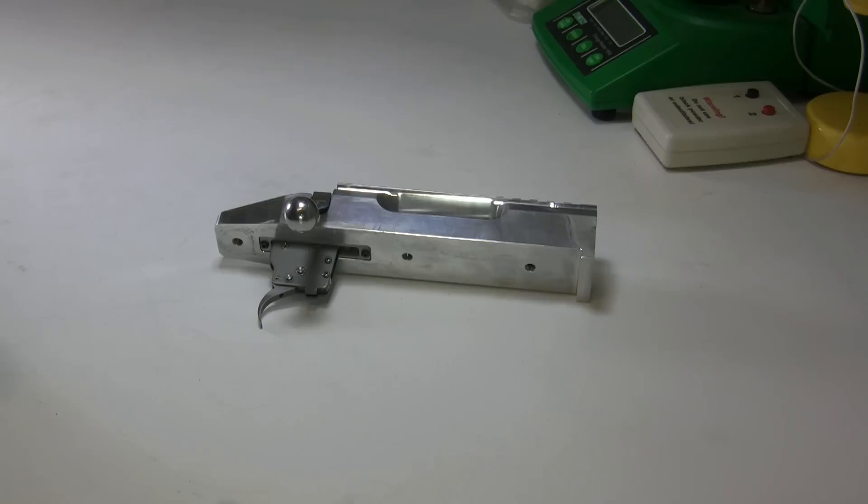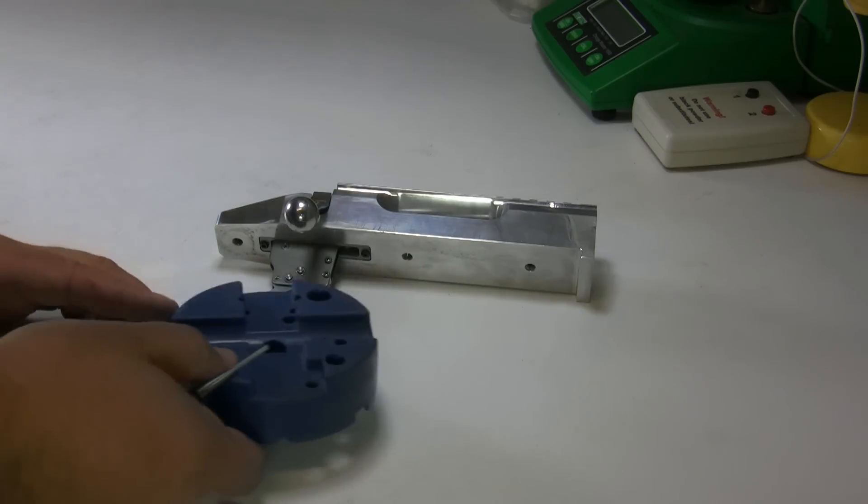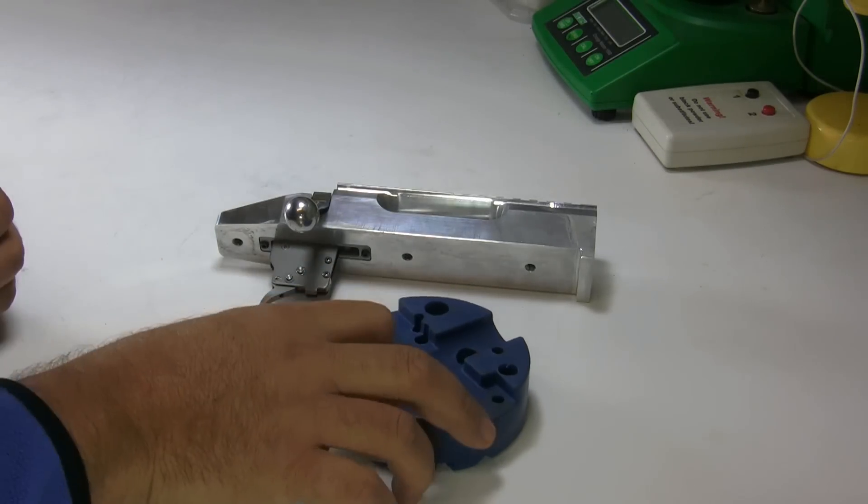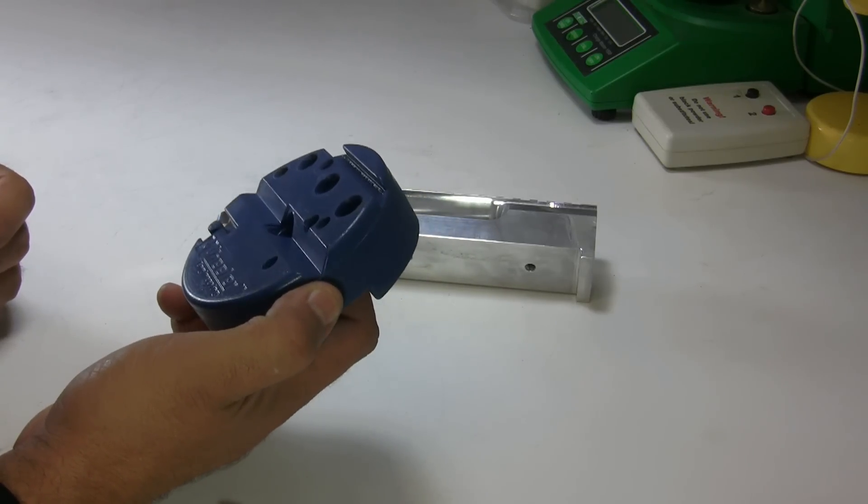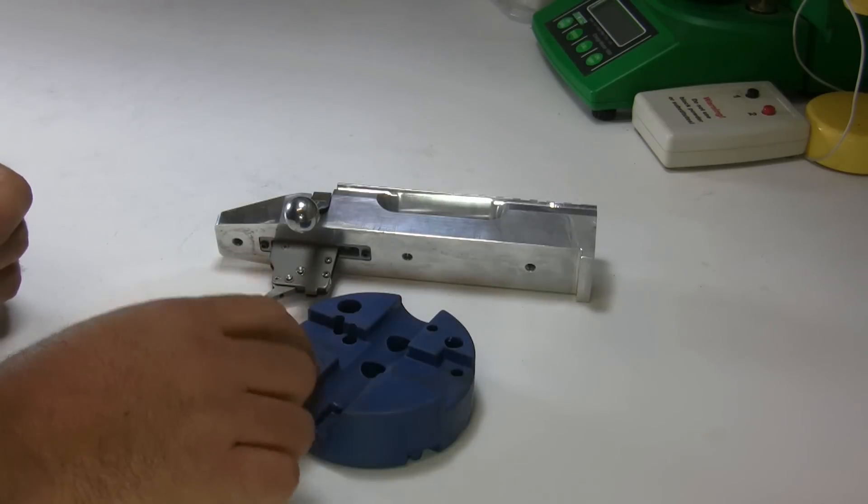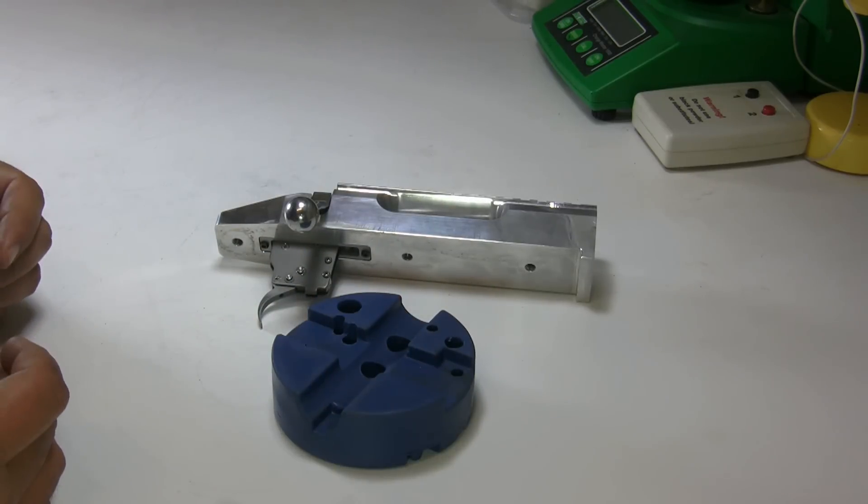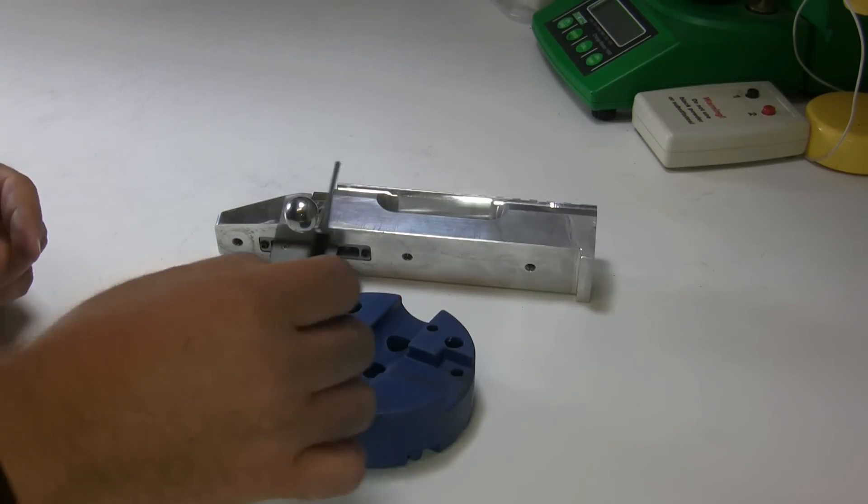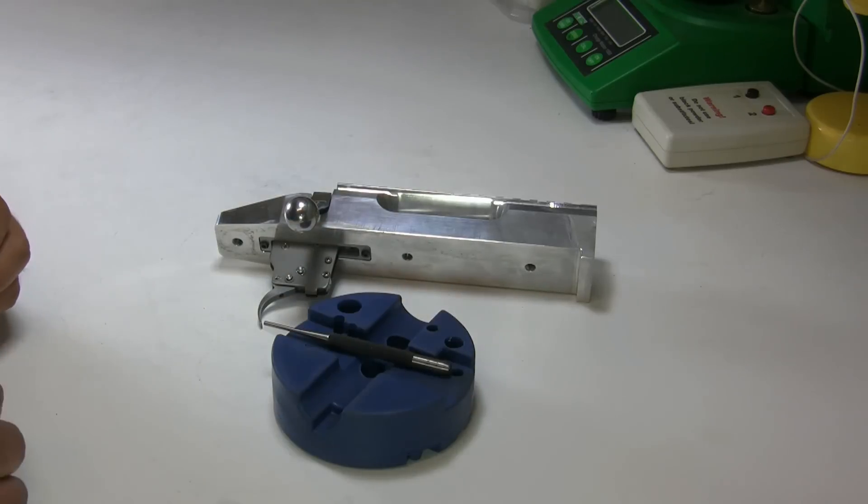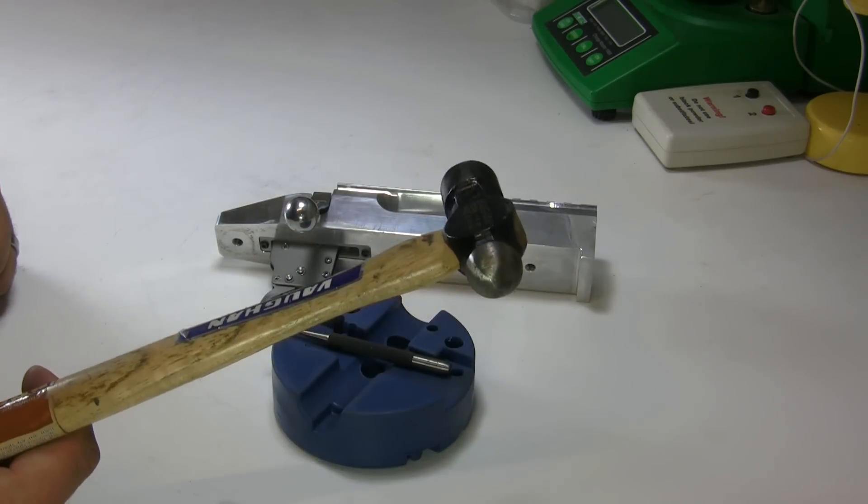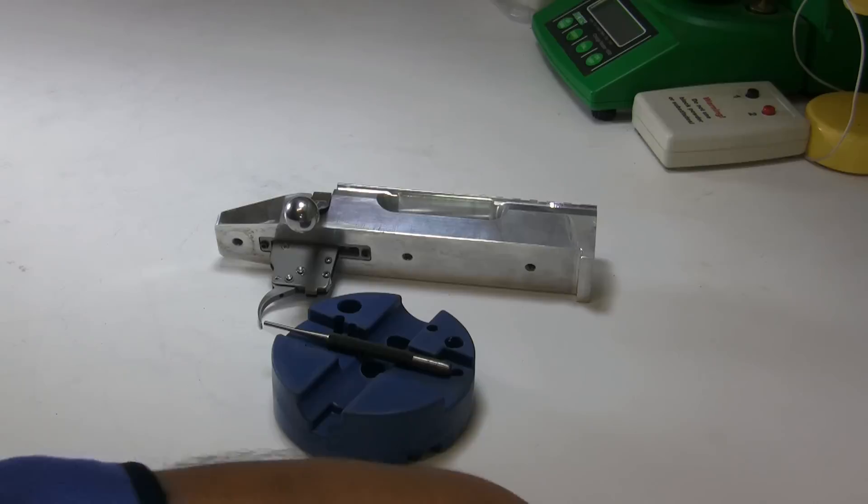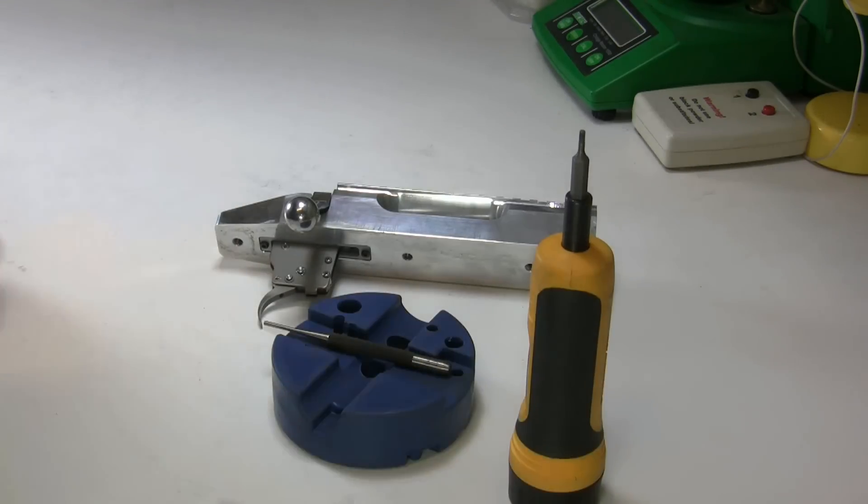The tools needed to put a trigger in are: I use one of these Wheeler Engineering Gunsmithing Blocks, they call it a Universal Bench Block. Use one of those, a 3/32nd punch, a small ball-peen hammer, and I use a torque wrench. That's all it takes.